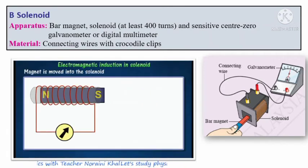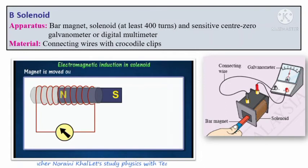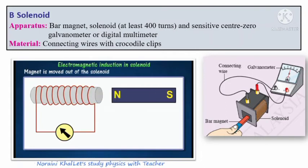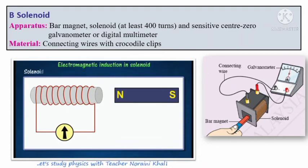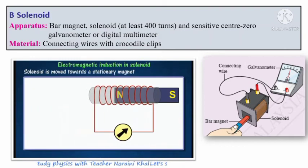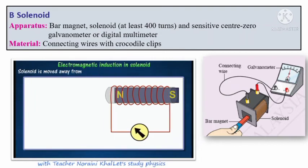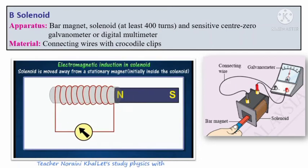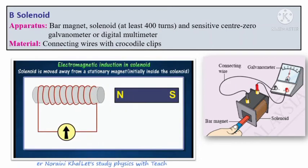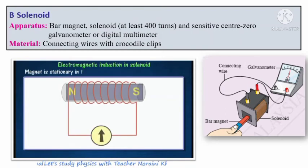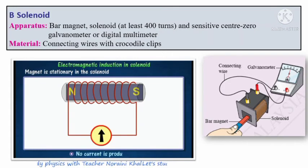When the magnet is moved into the solenoid, you can see the pointer deflects to the right. When moved away, the pointer deflects to the left. Now the solenoid moves towards a stationary magnet — it deflects to the right. Or if the solenoid moves away from the stationary magnet, the pointer deflects to the left. What happens if the magnet is stationary inside the solenoid? No reading — zero — meaning no current is produced.